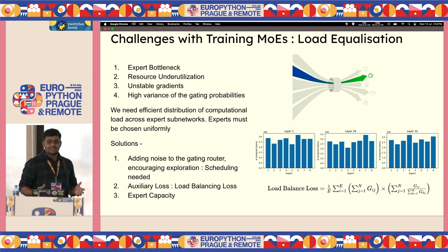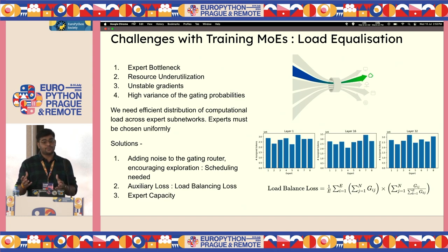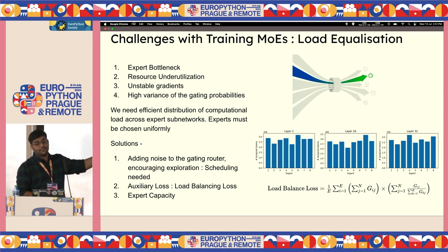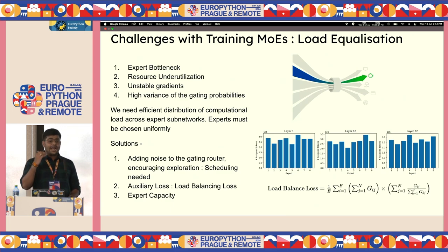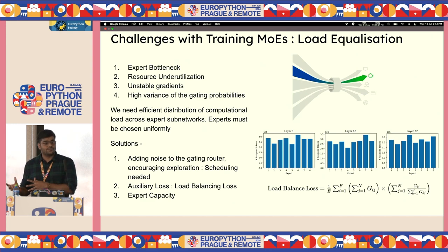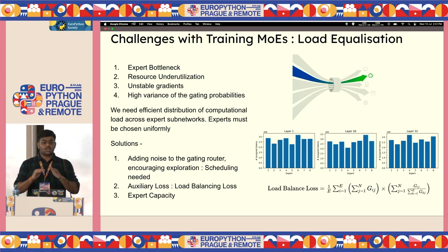But it's not as simple as it sounds — which is why mixture of experts has only been recently solved. We could have applied it after the attention paper in 2017 or after later developments, but certain training challenges made it extremely difficult. The primary problem is load equalization. If you randomly start training a mixture of experts model, the initial expert selected improves over time, and the gating router starts choosing just that one expert for everything. We want to avoid that bottleneck and distribute the load equally across all experts, both for engineering efficiency and for specialization.